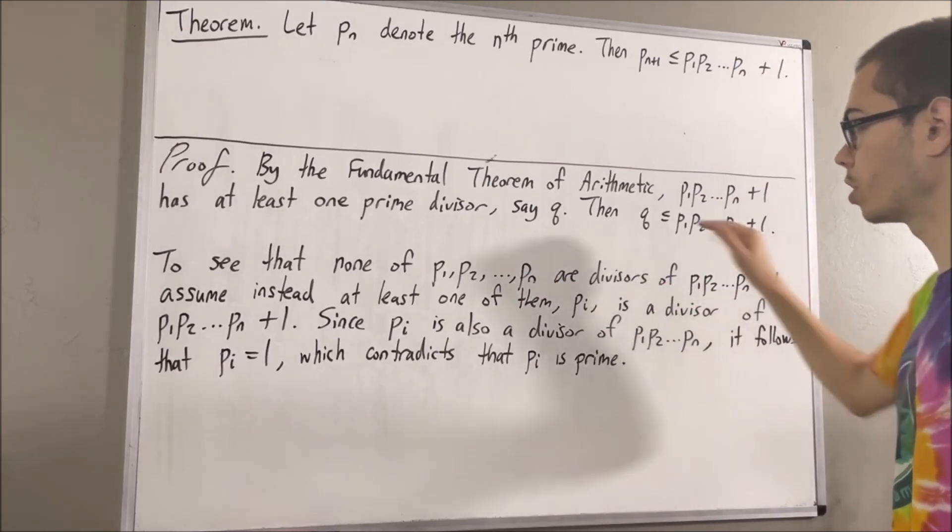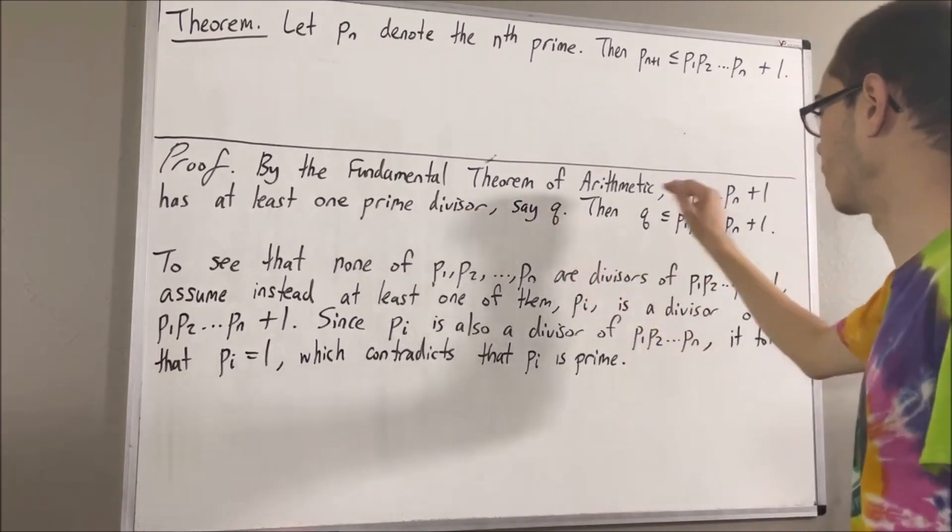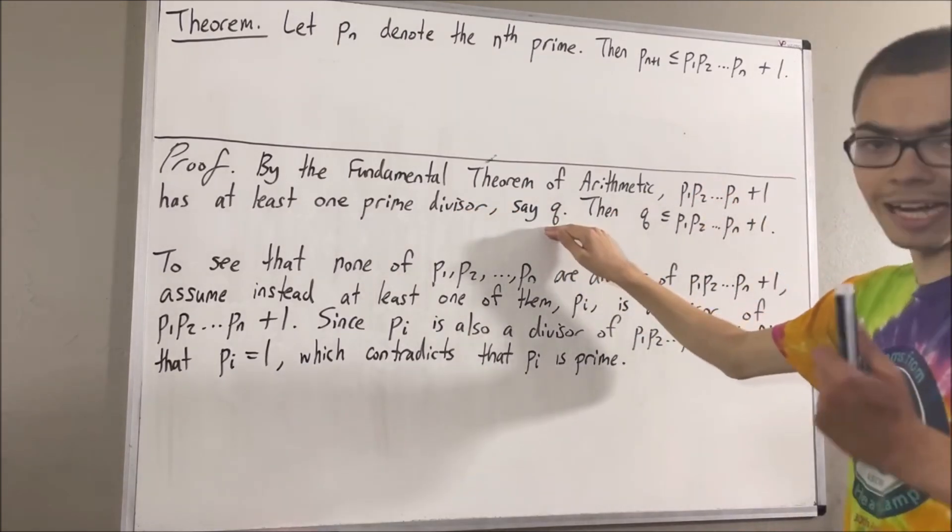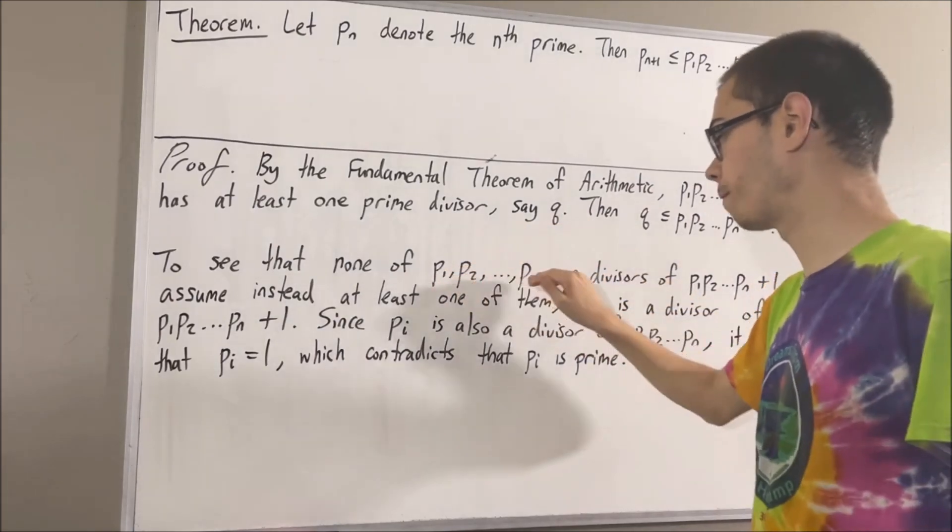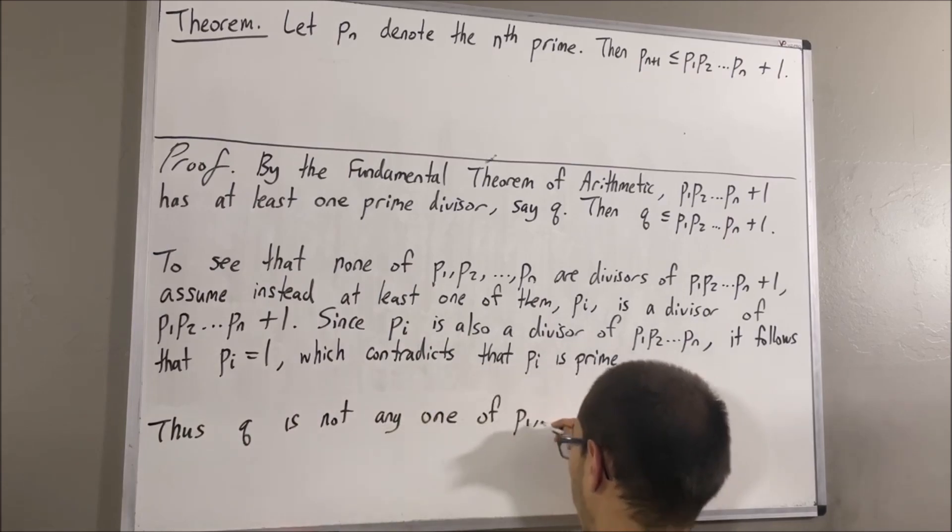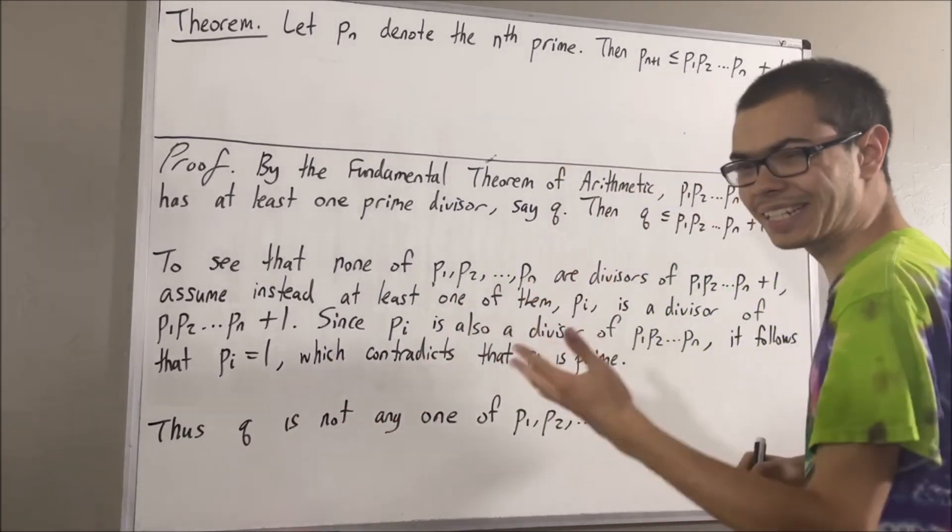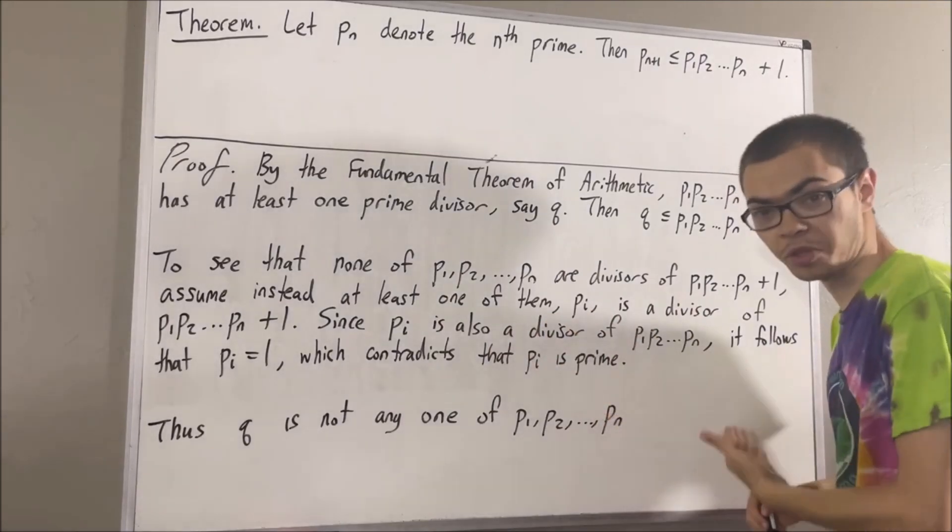Well, we know that q is a prime number and q is a divisor of this quantity. So, q cannot be equal to any one of the first n prime numbers. But, we know q is a prime number, so q must be at least as big as the n+1 prime number.